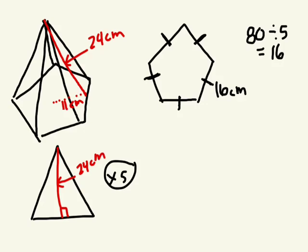And we just figured out, do we know the base of the triangle now? The triangle lies on top of the pentagonal base. So what's the base of the triangle? 16 centimetres. Okay, so that's the easy part. We can figure out the area of the triangle, no problem.